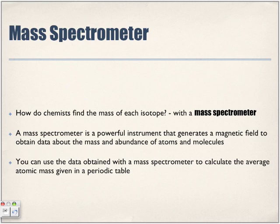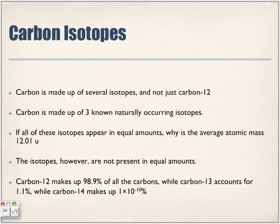You can use the data obtained with the mass spectrometer to calculate the average atomic mass given in the periodic table. Using that, they were able to decipher that carbon-12 makes up 98.9%, and they were able to get the values for carbon-13 and determine what was left.